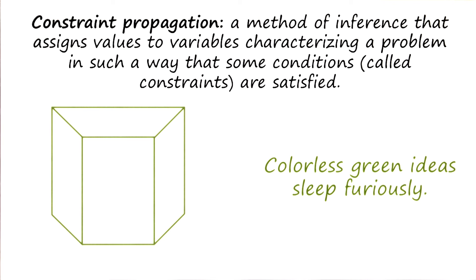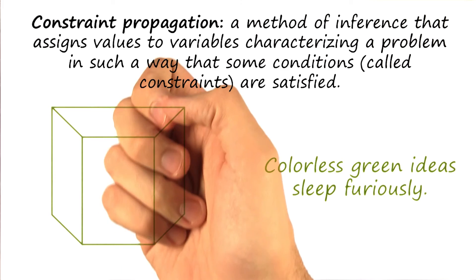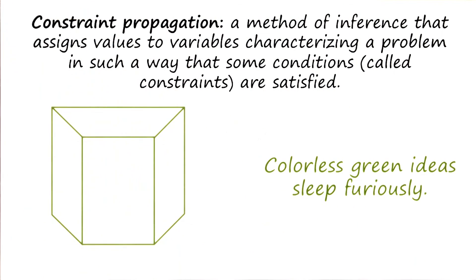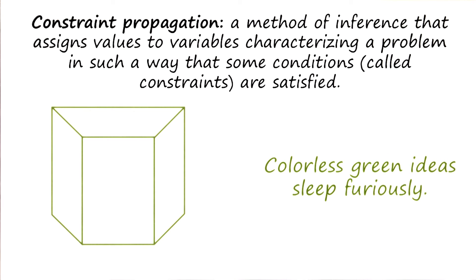There's another connection here to understanding as well. Ashok talked about how we can interpret this shape as either popping out towards us or down into the screen. We talked about two simultaneously accurate interpretations of the same thing in understanding, with regard to sentences that can be read as puns. For example, when I said 'it's hard to explain puns to kleptomaniacs because they always take things literally,' the word 'take' can simultaneously be interpreted as 'interpret' and 'physically remove' while satisfying all the constraints of the sentence.